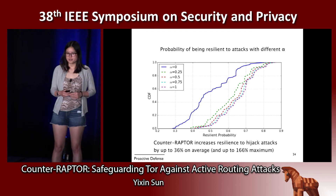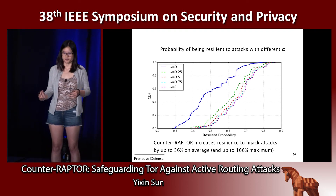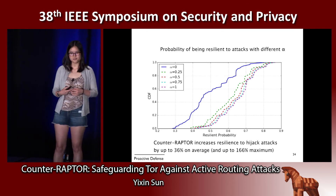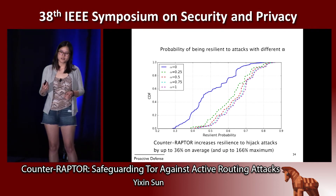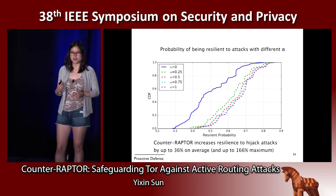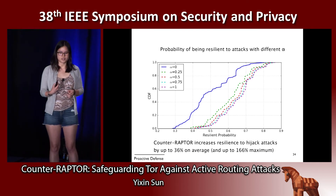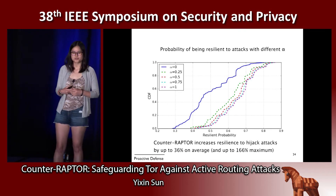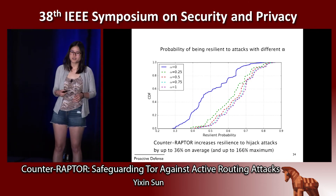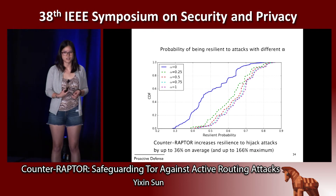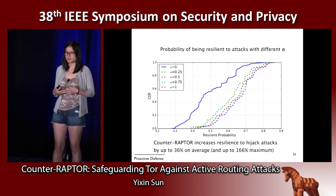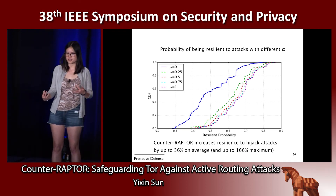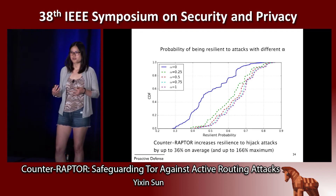This graph shows the probability of being resilient to attacks with different alpha values. Alpha equals zero — the blue line — corresponds to vanilla Tor bandwidth-only selection, where resilience probability is low. With even a small increase to alpha equals 0.25, there is already a clear increase in resilience to hijack attacks. This increase can go up to 36% on average when alpha equals one, and up to 166% maximum for certain clients. The algorithm benefits clients with low resilience most, while clients already having high resilience have less room for improvement.